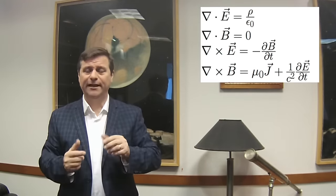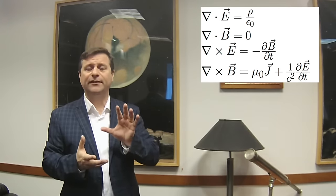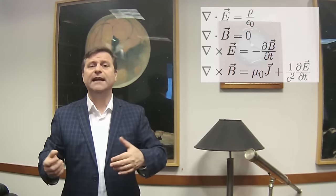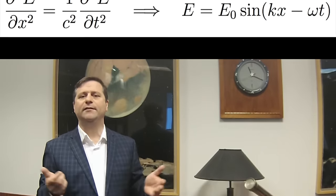He took all these experimentally derived things and linked them in one coherent framework, showing the sources of electric and magnetic fields and how they interact. What you eventually find is that the speed with which the wave propagates equals the speed of light — exactly. So the disturbances in electromagnetic fields move at the speed of light, and therefore those disturbances are light.